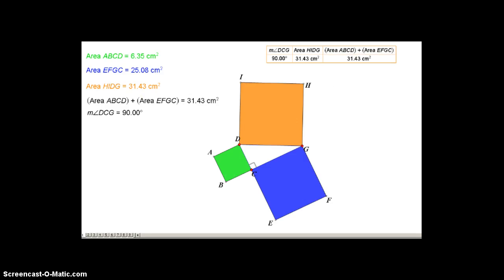We can use the converse of the Pythagorean theorem to help us classify our triangles. So the picture we have right now, we have the orange square, which is 31.43 square centimeters, the green square, which is 6.35 square centimeters, and the blue, which is 25.08 square centimeters. If we combine the blue and the green together, you'll notice that it's equal to the area of the square that's off the hypotenuse. So if we look in this chart that's up here, our angle created in our triangle is 90 degrees, giving us a right triangle. The area of the orange is equal to the area of the sums of the squares.